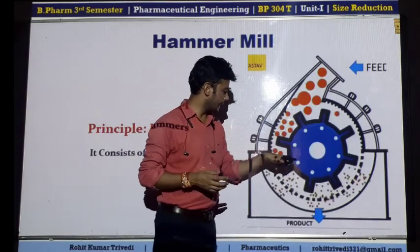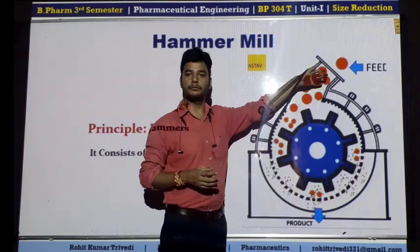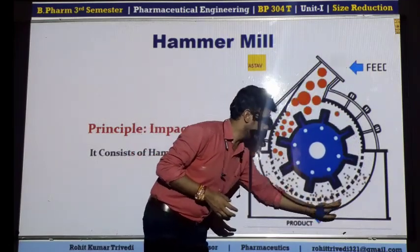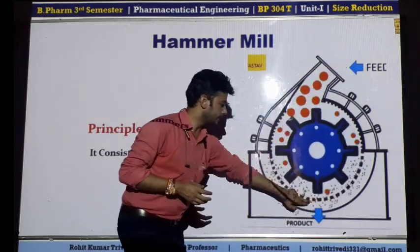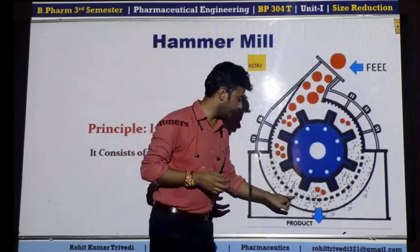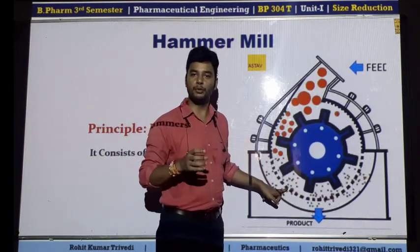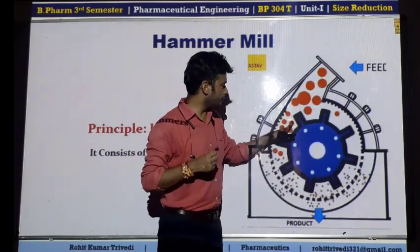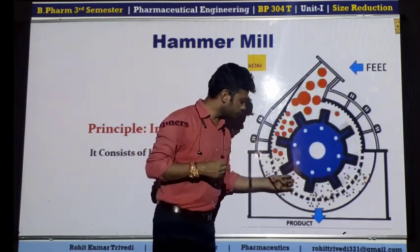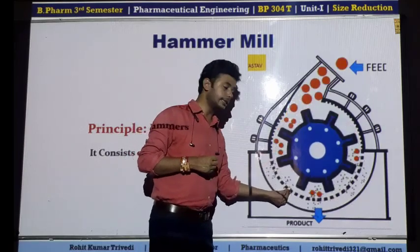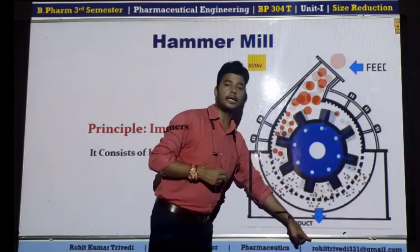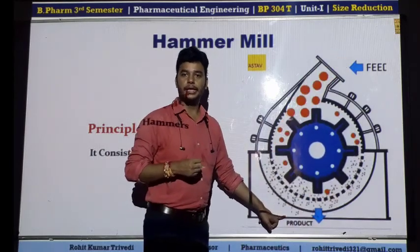We have already discussed these are the hammers. This is the entry point from where the large size material will enter into the mill. Here in this area you can see there is a perforation, or a screen. This dotted line is a screen basically — it will have a certain pore size. During the process, certain particles will be reduced to smaller particles, and all those small particles that have a particle size lesser than the pore size of the screen will fall down and be collected into the collector.